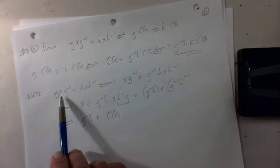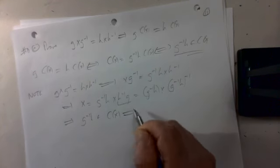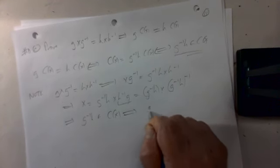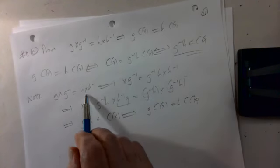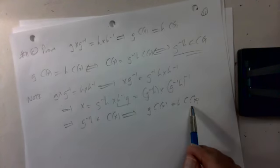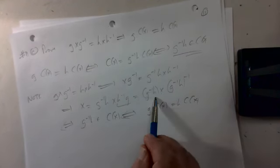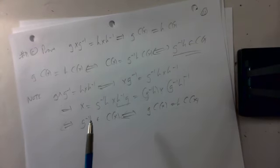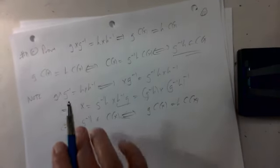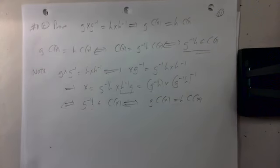For part (d): there is a one-to-one correspondence between the left cosets of C(x) and the elements of the conjugacy class of x. Two elements give the same conjugate gxg⁻¹ if and only if they lie in the same coset, so distinct cosets give distinct conjugates — establishing the bijection.